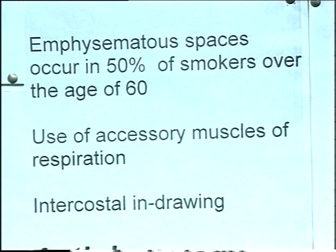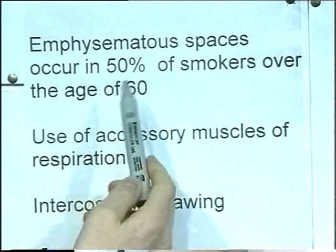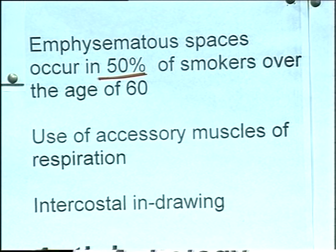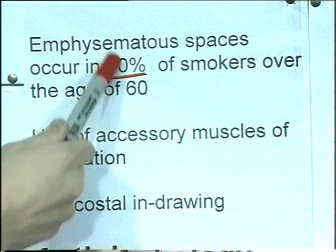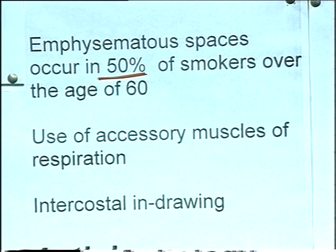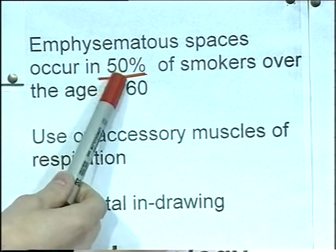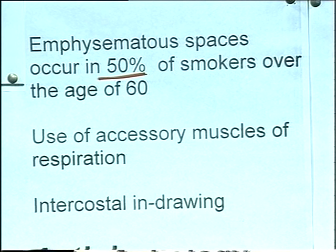Now, in the UK, the main cause of emphysema is smoking. Emphysema airspaces, as we've actually seen on the pictures, occur in 50% of smokers over the age of 60. So, people that have smoked for some years - half of them get emphysema. There's a 50-50 chance that a smoker will develop emphysema after the age of 60.